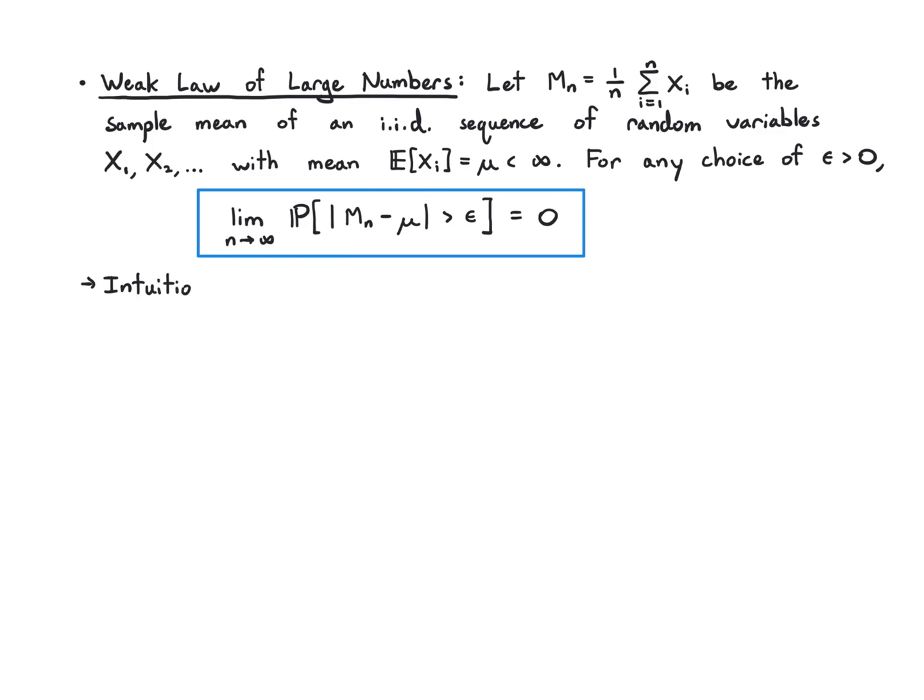So intuitively, for any tolerance ε that you choose, the sample mean will eventually land in the interval μ minus ε to μ plus ε with high probability.